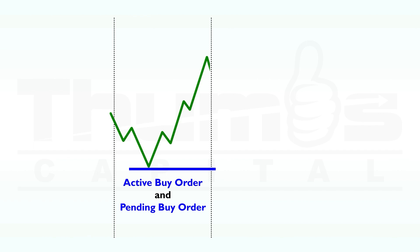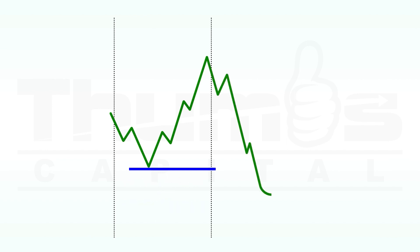When estimating institutional accumulated orders, only active orders count. For a pending order to become active, the price must trigger it by running through the pending order level. When this happens, the total active order on that day becomes two — that is one original active order and one newly activated pending order. In summary, when the price runs one pending order on a day, the active order on that day becomes two.